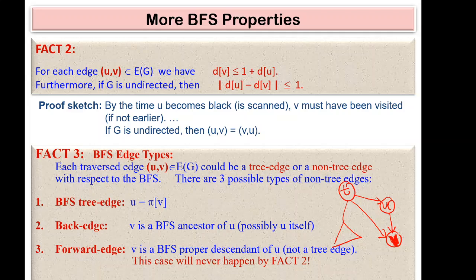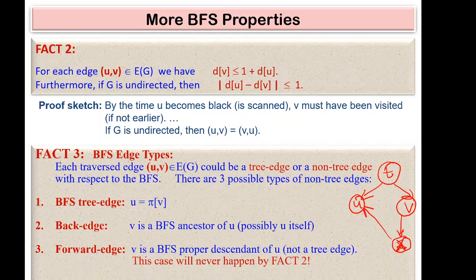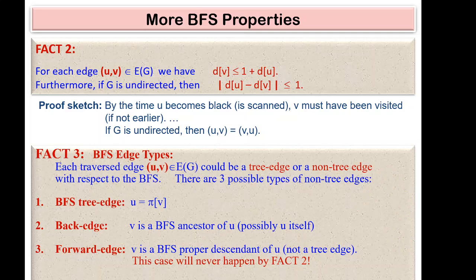Forward edges are the opposite of back edges: if there is an edge from a node to a proper descendant (not through the direct tree path), it is called a forward edge. Cross edges are when there is an edge between two nodes u and v where u is neither the ancestor nor the descendant of v — they may or may not be at the same level.